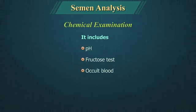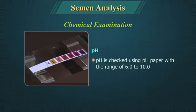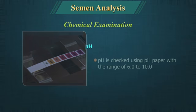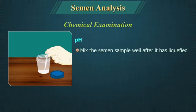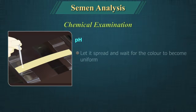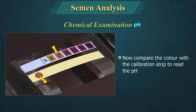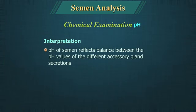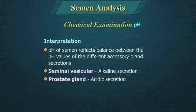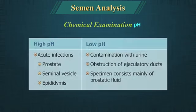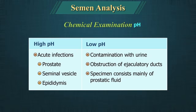Chemical examination includes pH, fructose test and occult blood. pH is checked using pH paper in the range of 6 to 10. Mix the semen sample well after it has liquefied, take a drop and place it on the pH paper, let it spread and wait for the colour to become uniform, then compare the colour with the calibration strip. The pH of semen reflects the balance between alkaline seminal vesicular secretion and acidic prostatic secretion. High pH values are seen in acute infections of the prostate, seminal vesicle or epididymis. Low pH may be due to contamination with urine, obstruction of the ejaculatory duct, or when the specimen consists mainly of prostatic fluid.